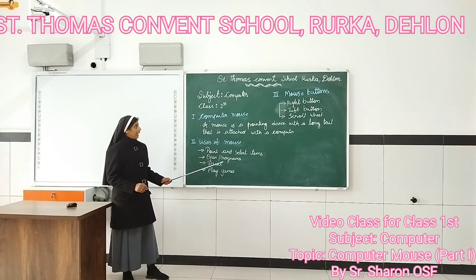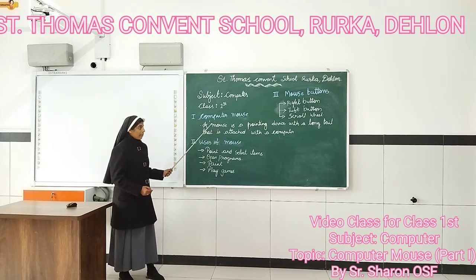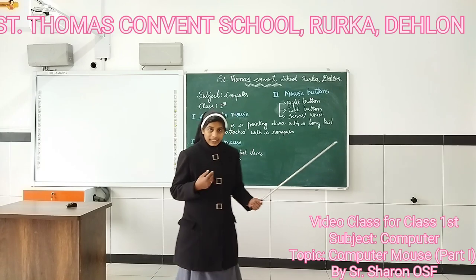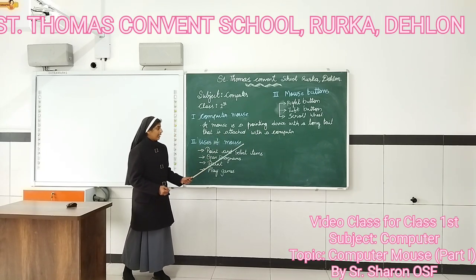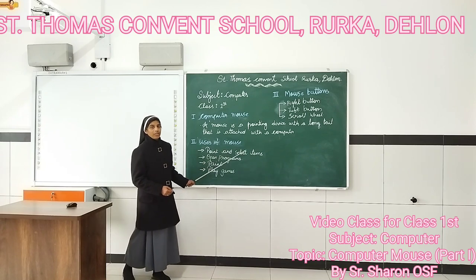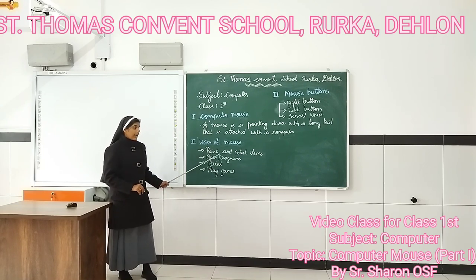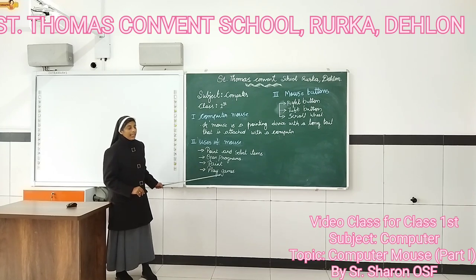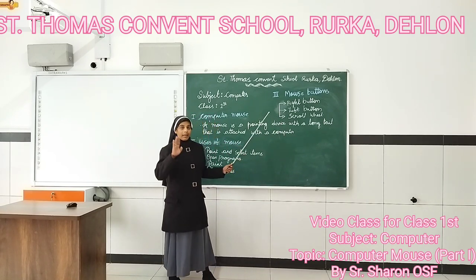Now let us revise the questions from today. What is the computer mouse? A mouse is a pointing device with a long tail attached to the computer. The uses of computer mouse — there are 4 uses of computer mouse. The mouse has 3 buttons.